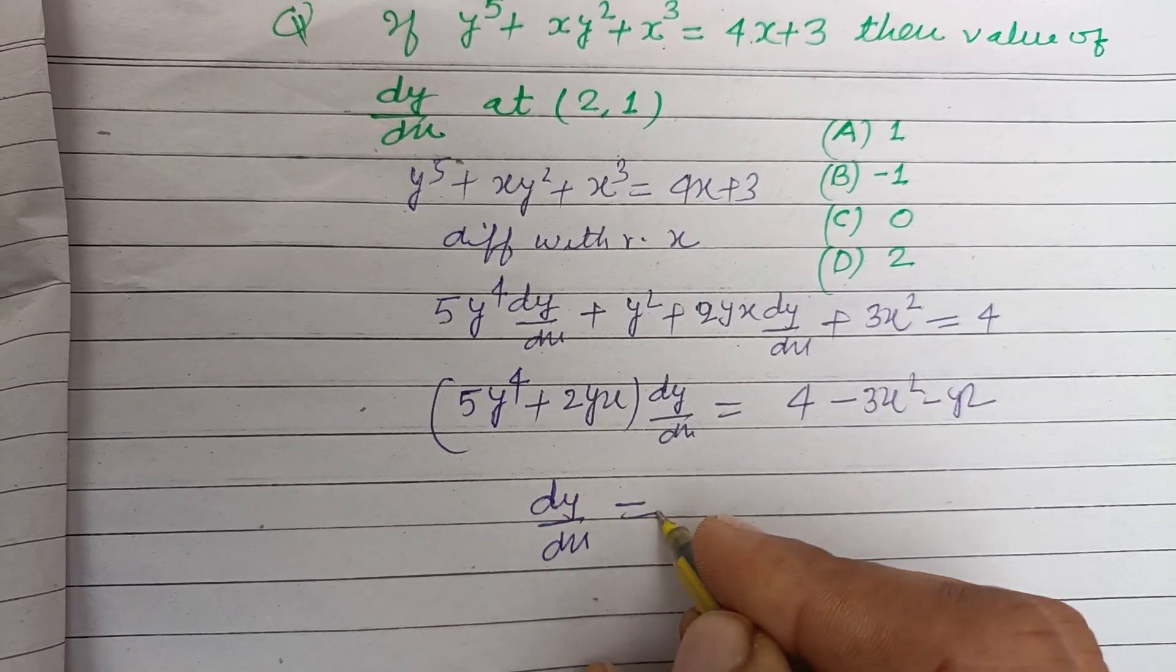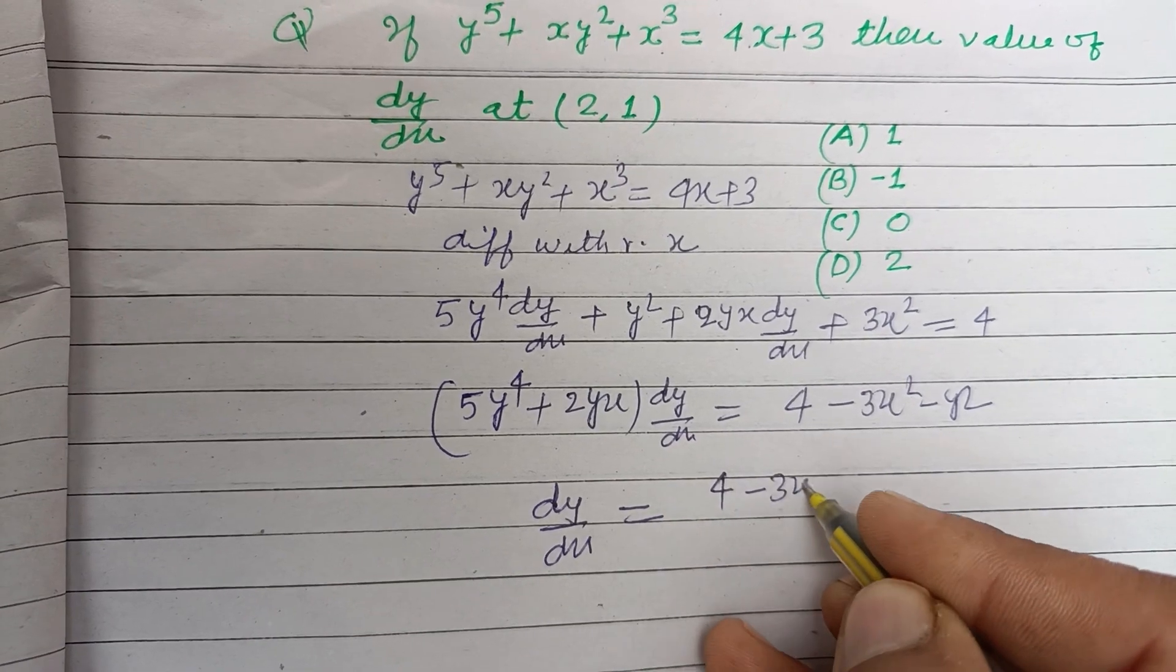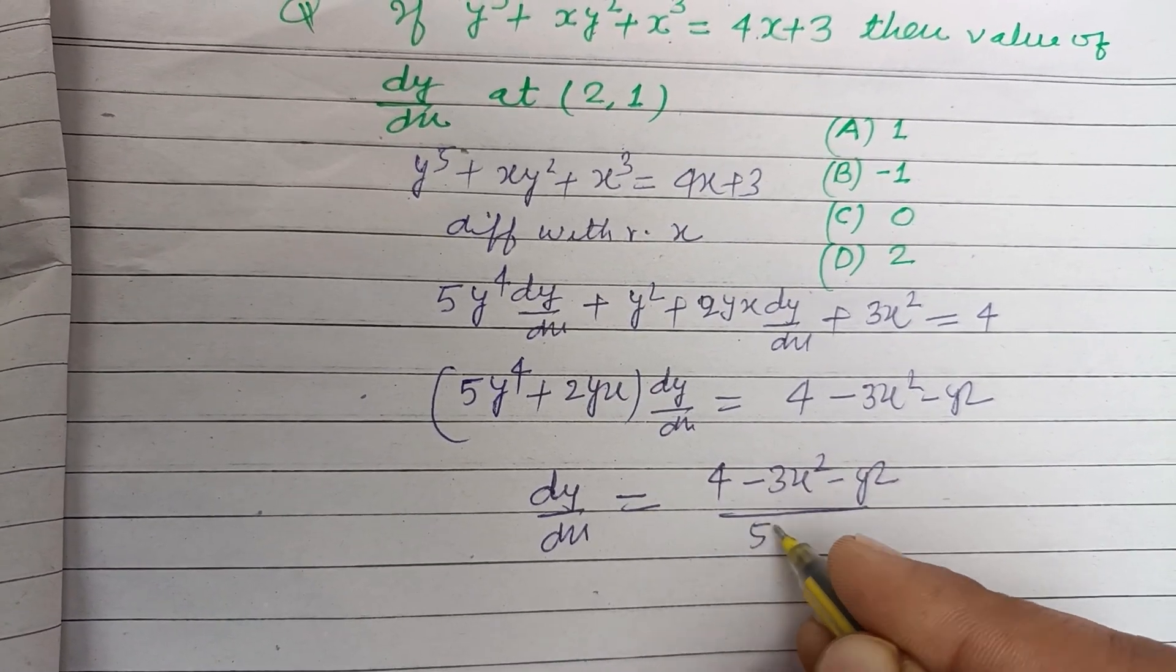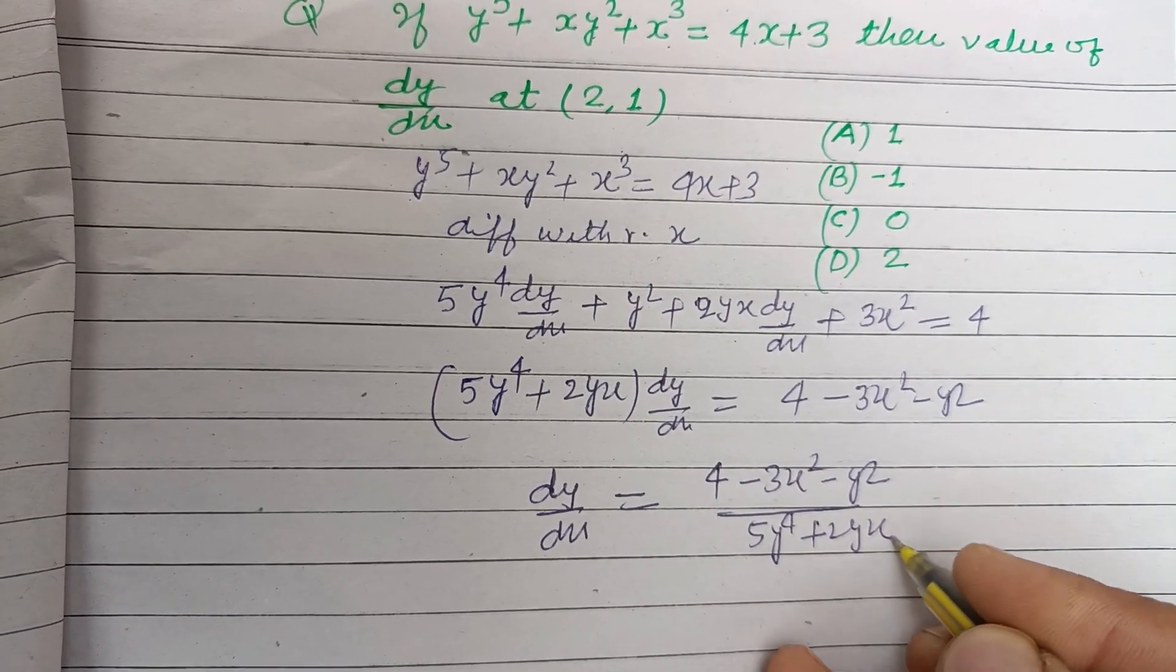Therefore dy by dx equals 4 minus 3x square minus y square upon 5y to the power 4 plus 2yx.